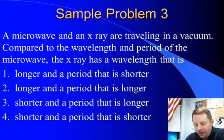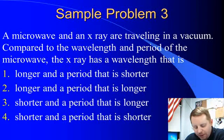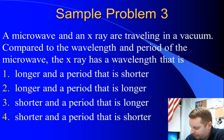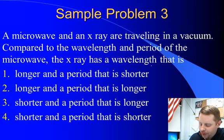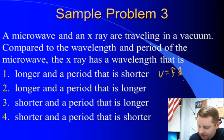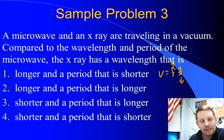Sample problem three. A microwave and an X-ray are traveling in a vacuum. Compared to the wavelength and period of the microwave, the X-ray has a wavelength that is longer or shorter, and a period that is longer or shorter. Well, we know that the wavelength of the X-ray must be shorter because it has more energy. Shorter wavelengths, if you remember V equals F lambda, shorter wavelengths mean higher frequencies and frequency is directly proportional to energy.